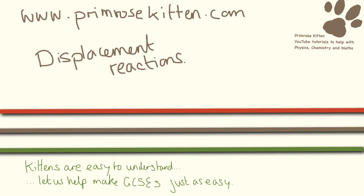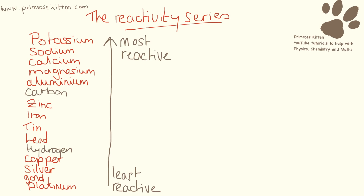We can use the reactivity series to predict what's going to happen in a reaction. These are displacement reactions we're talking about. Here is the reactivity series — most reactive at the top and least reactive at the bottom. You'll notice I've put carbon and hydrogen in there in a different colour because these are non-metals, whereas the reactivity series is the reactivity series of metals.